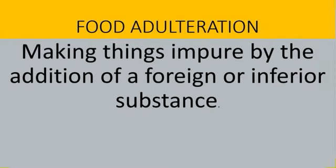Food adulteration: Sometimes the things we buy in the market are mixed with harmful and unwanted substances. Food can also get adulterated due to carelessness or lack of proper handling. Making things impure by the addition of a foreign or inferior substance is called adulteration. An adulterated substance will not indicate the true properties of the original substance.